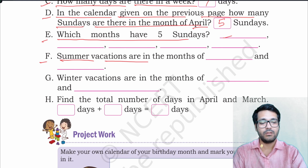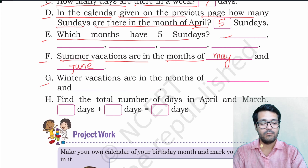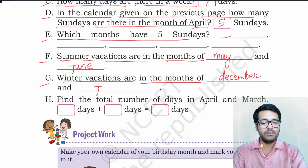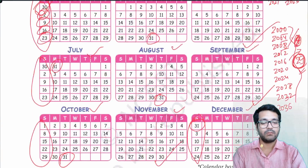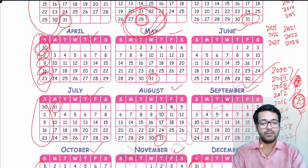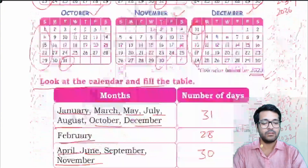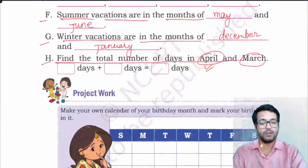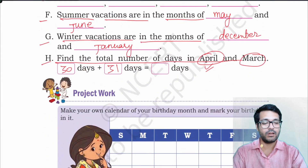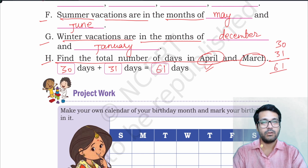Summer vacations are in the months of May and June. Winter vacations are in the months of December and January. Find the total number of days in April and March. April has 30 days and March has 31 days. If you add 30 and 31, the total number of days will be 61.